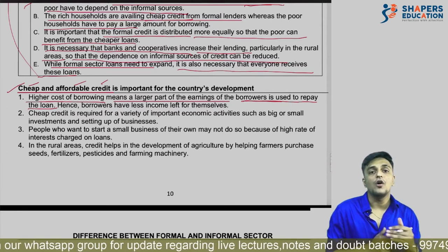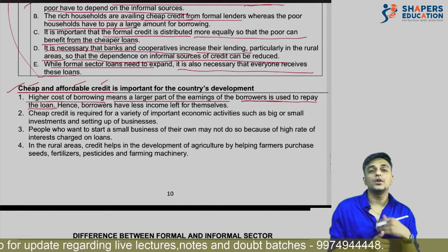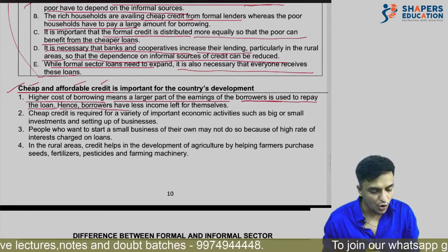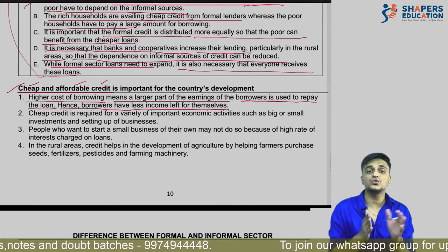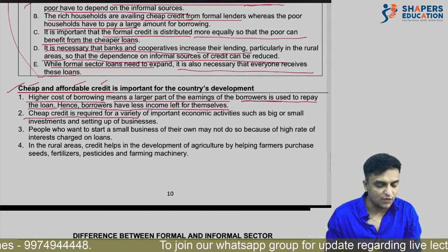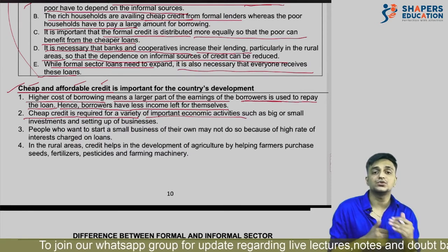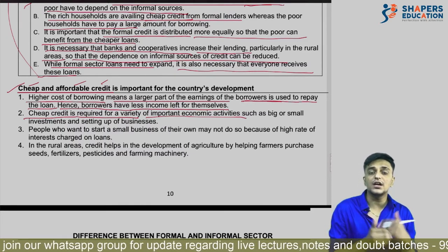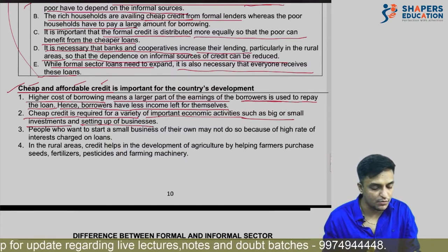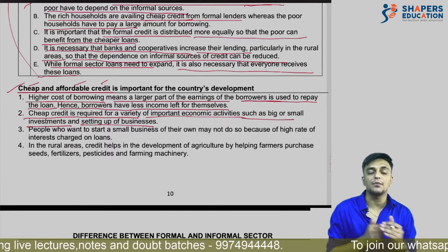For example, suppose a person takes a loan of 1000 rupees, but due to high interest the repayment amount becomes 1200 rupees, while their earnings are low. That is why it is necessary that the rate of interest be low and earnings be higher. Borrowers have less income left because most of it goes toward paying interest. Cheap credit is required for a variety of important economic activities — farmers need seeds, pesticides, and raw materials. For different economic activities such as big or small investments or setting up businesses, cheap loans provide great benefit.